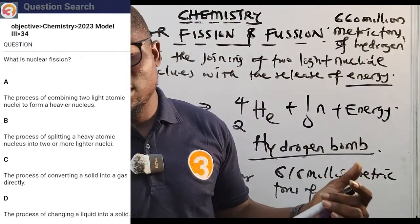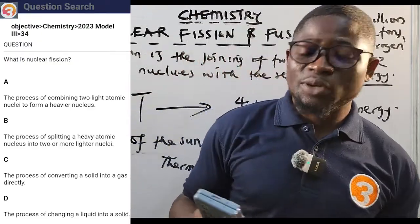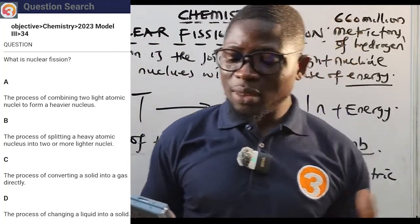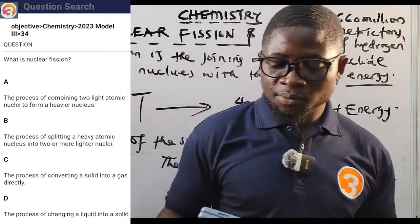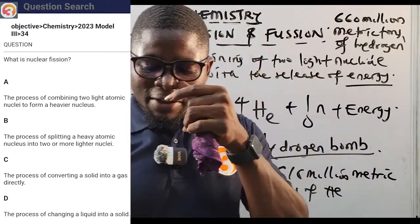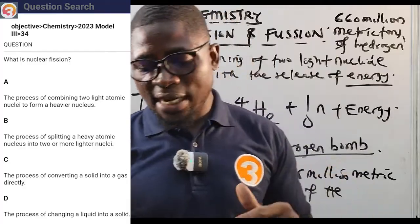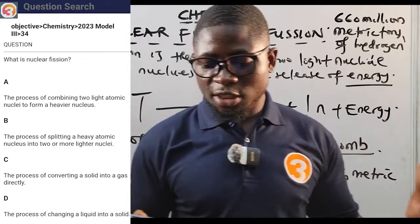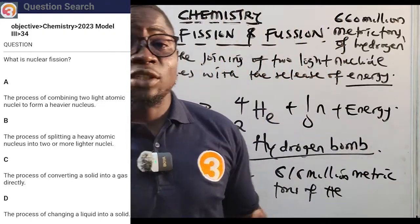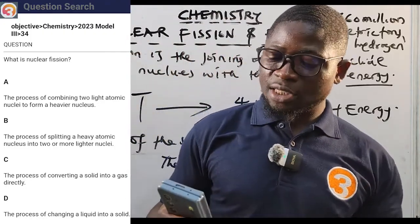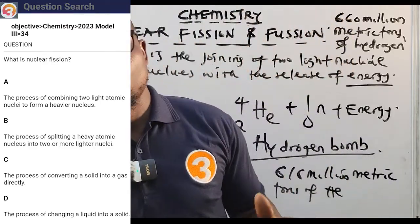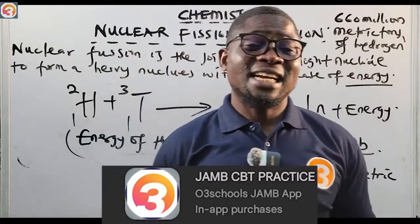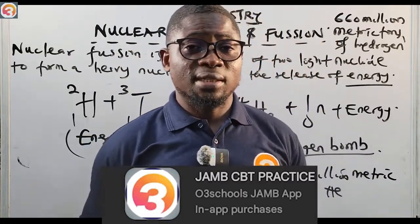Third question, 2023-34: what is nuclear fusion? A — the process of combining two light atomic nuclei to form a heavier nucleus; B — the process of splitting a heavy atomic nucleus into two or more lighter nuclei; C — the process of converting a solid into gas directly; D — the process of changing a liquid into a solid. The correct answer is option B — the process of splitting a heavy atomic nucleus into two or more lighter nuclei. Please download the app, activate it and start practicing your way to success. See you at the top.